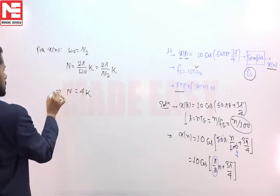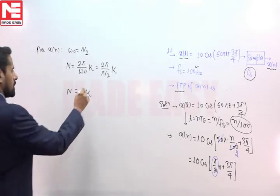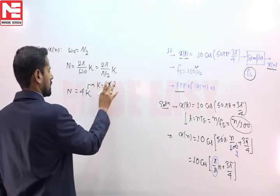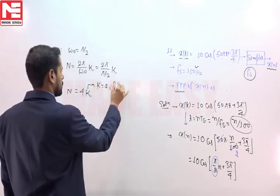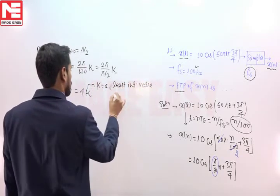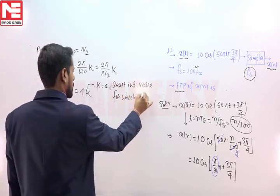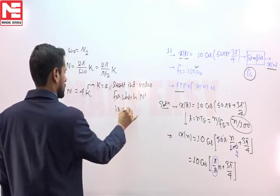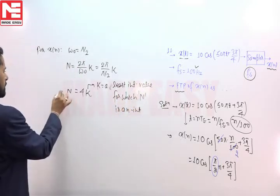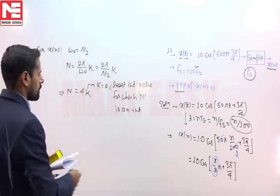In case of discrete time signaling, k is the least integer value for which the fundamental time period N is an integer. To obtain N as an integer, we will put the least integer value of k, which is 1.